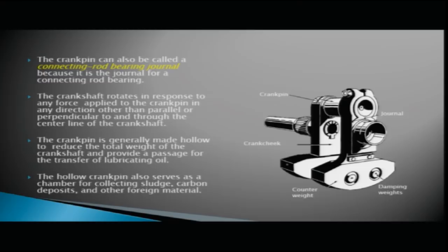To summarize: the crank pin, crank cheek, and journal are the three main parts of a throw. Two crank cheeks and a crank pin make a throw. The crank pins are generally hollow to collect foreign materials, sludge, and carbon deposits, and also provide a passage for lubricating oil. Any force applied to the crank pin — other than parallel or perpendicular to the centerline — makes the crankshaft rotate.